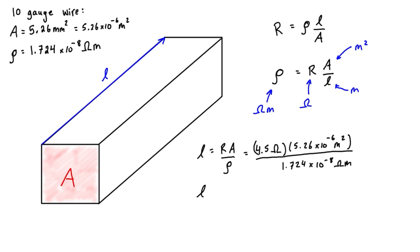So we can simplify this a little bit. You can just do this all in one step in your calculator, or if you want to, this is equal to 4.5 times 5.26 all over 1.724, and then times the units over here, which were 10 to the negative 6 over 10 to the negative 8. And you'll see that the units here of ohms cancel out with ohms, and meters squared cancels out with one meters. And this is left with just times meters.